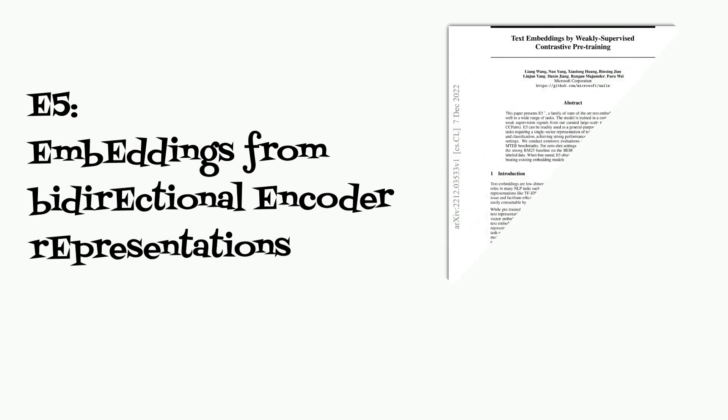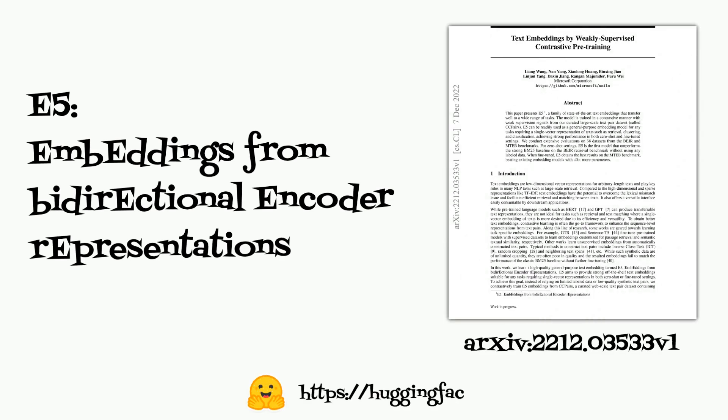To calculate text embeddings I will use version 2 of the E5 model. E5 name comes from embeddings from bidirectional encoder representations.